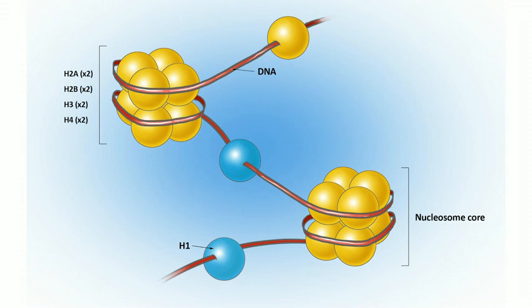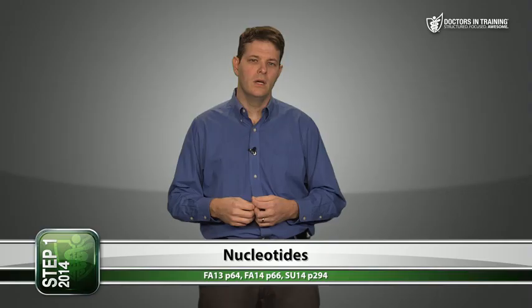Because of the negatively charged phosphate groups, DNA loops around the positively charged histones — like a thread wrapping around a spool. Moving down the DNA you reach another nucleosome, like beads on a string. Histone H1 is the only histone not in the nucleosome core; it ties one nucleosome to the next, and that whole structure is chromatin.